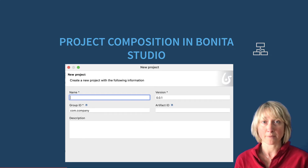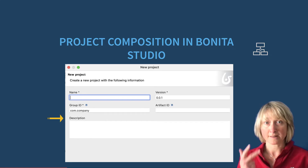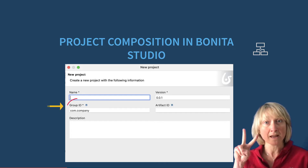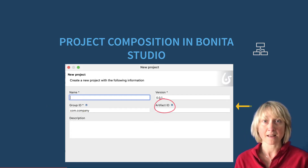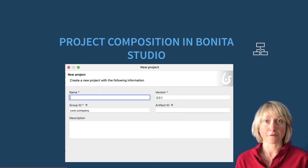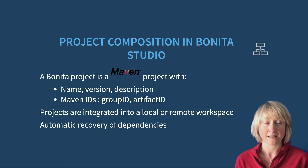Each project made with Bonita is identified by its name, version, and description, as well as two Maven IDs: the Group ID, which is preset, and the Artifact ID — the name of the JAR — which is the artifact of the project. For simplicity, it is updated automatically.